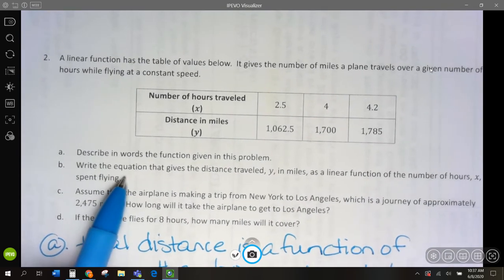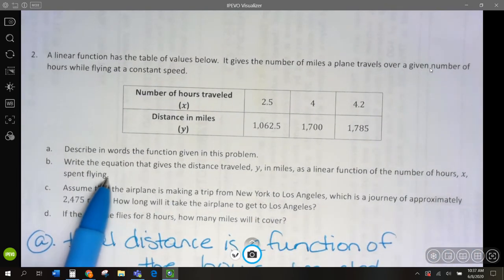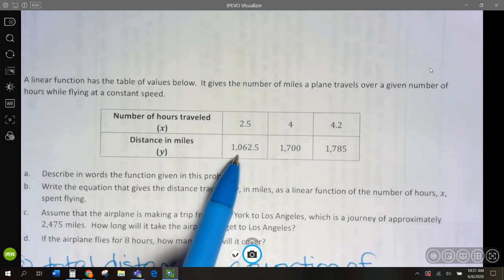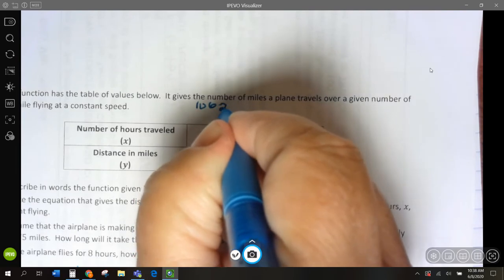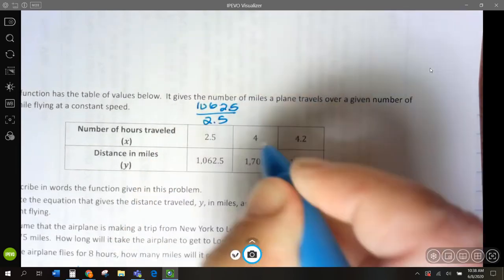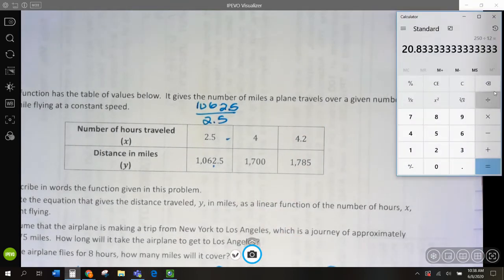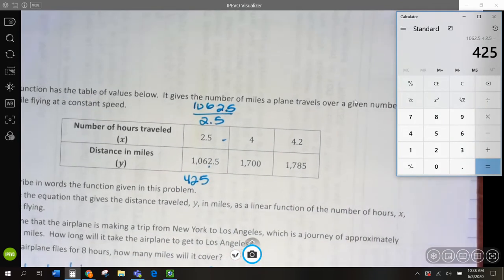Write an equation that gives the distance, y, in miles, as a linear function of the number of hours spent flying. Well, let's make sure we have a constant rate here. So, let's go our miles per hour. Let's try this one. We go 1,062.5 divided by 2.5, miles divided by hours. And let's see what that rate is. And we get 425, 425 miles an hour. Pretty fast.